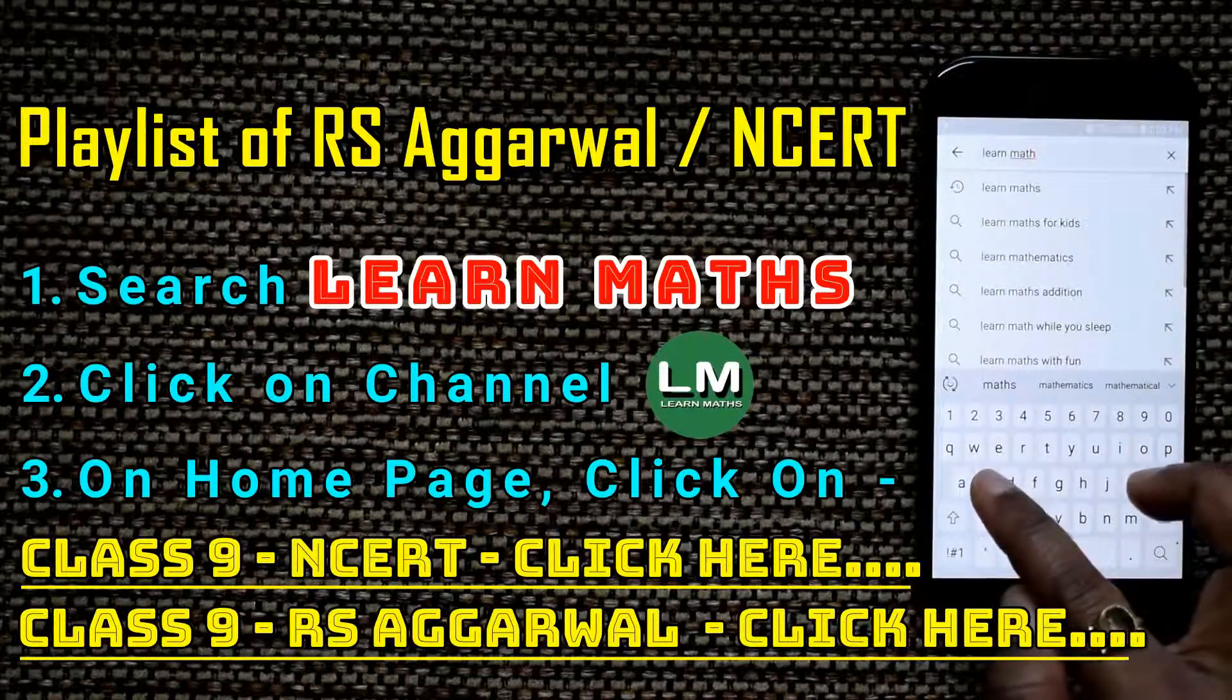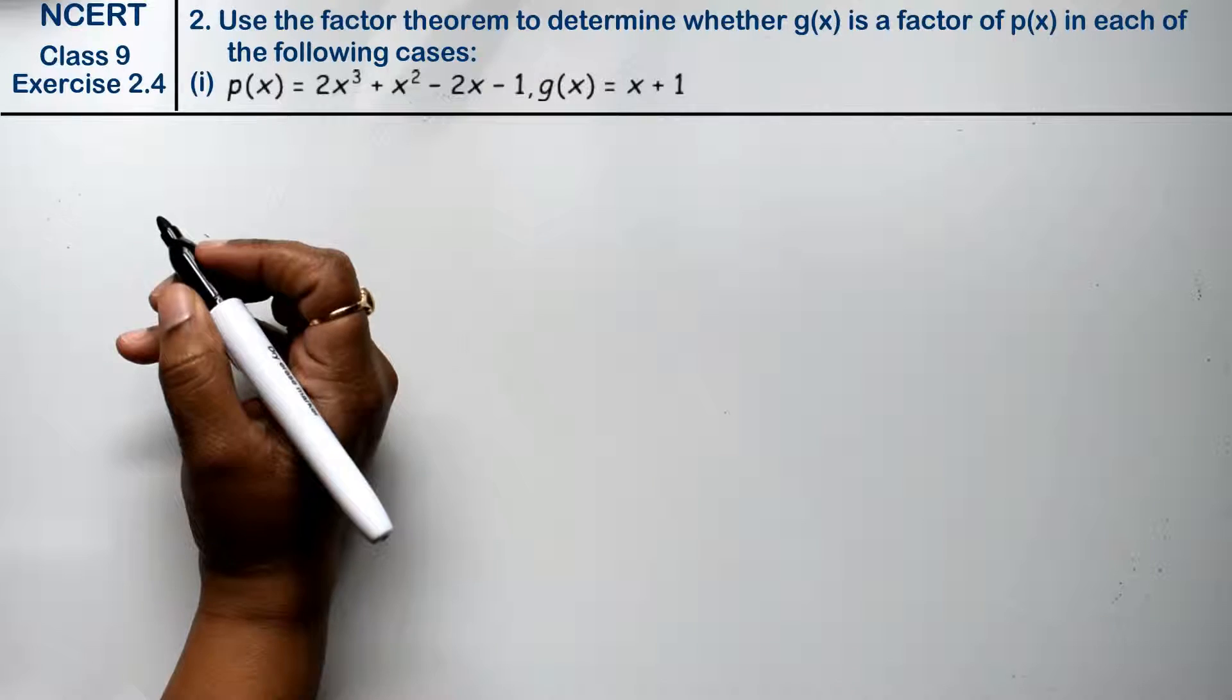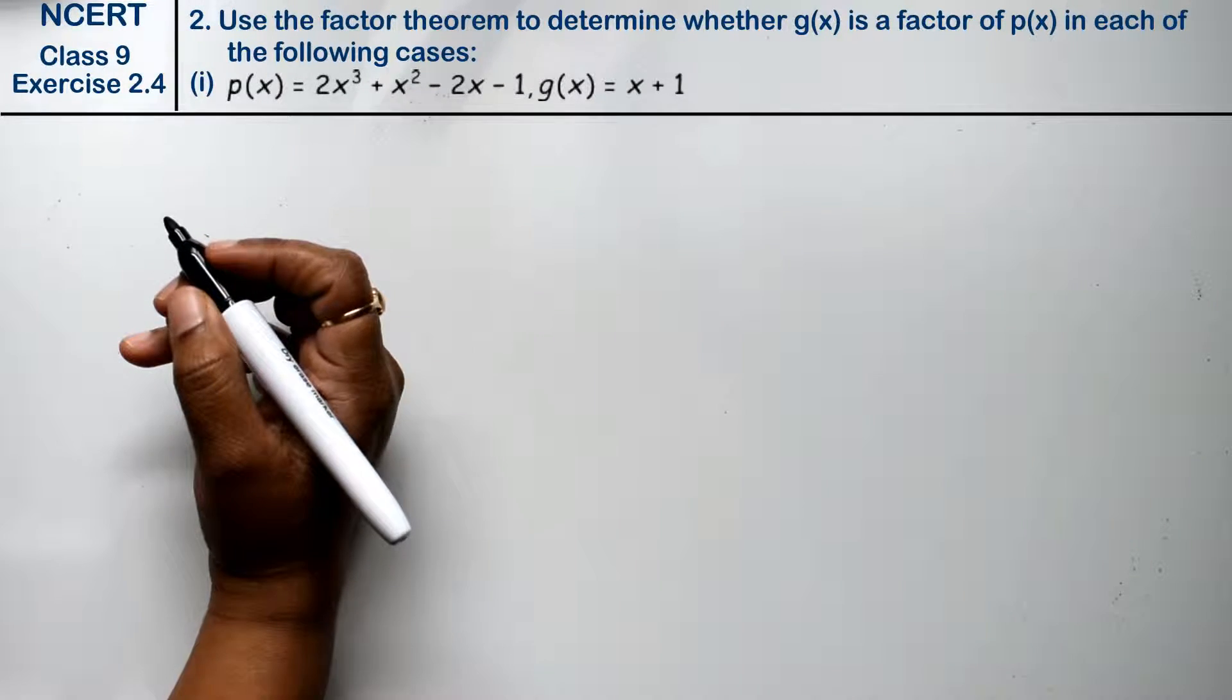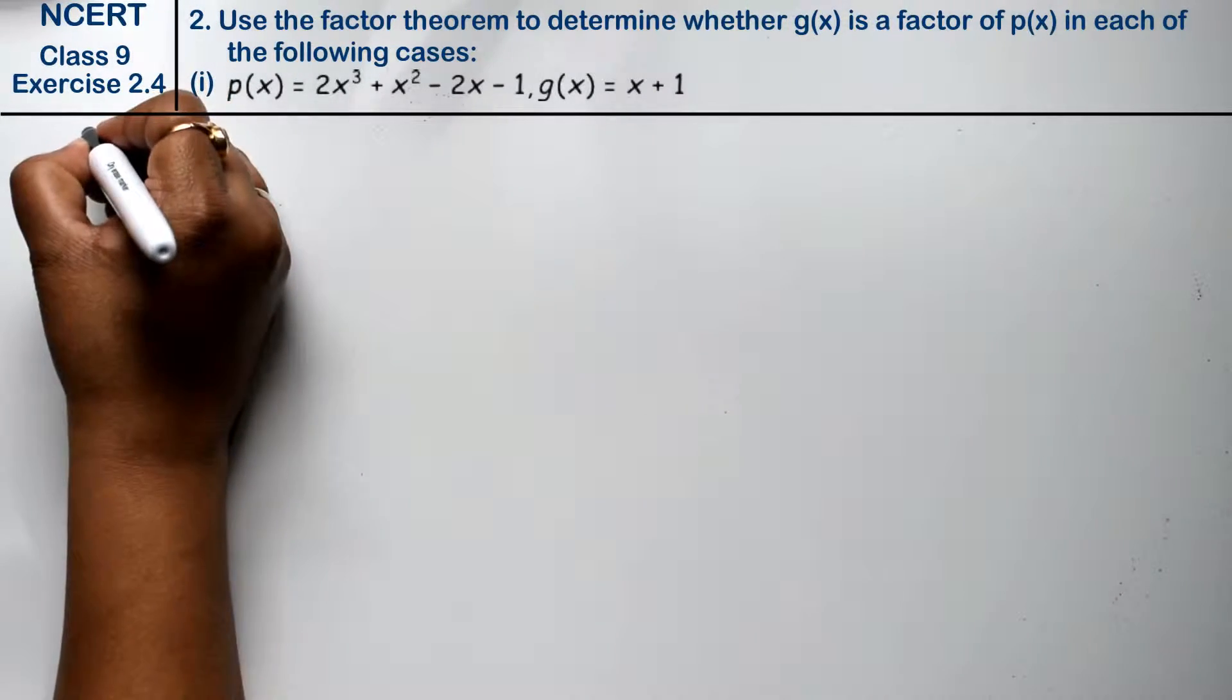Let's do question number 2 of exercise 2.4, the polynomial question. Question 2 is: use the factor theorem to determine whether g(x) is a factor of p(x) in each of the following cases. So we have to tell in this question whether g(x) is a factor of p(x) or not.